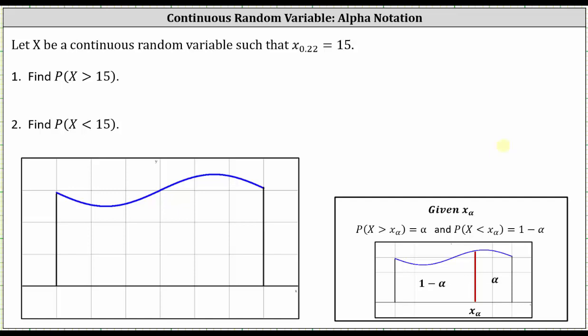Let x be a continuous random variable such that x sub 0.22 equals 15. This notation is called alpha notation, where if we are given x sub alpha,